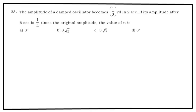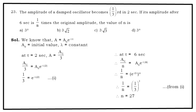Problem number 23. The amplitude of damped oscillator becomes 1/3 in 2 seconds. If its amplitude after 6 seconds is 1/N times the original amplitude, then the value of N is equal to - we know that A = A₀·e^(-λt) where A₀ is the initial value of amplitude, λ is constant. At t = 2 seconds, we have A = A₀/3. I put all the values there, so I get 1/3 = e^(-2λ).